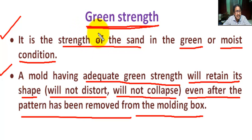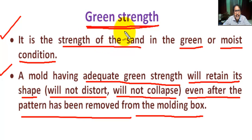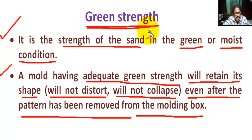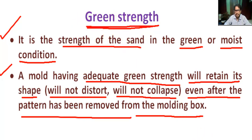The molten metal is poured into the green sand mold without any prior baking or drying. In the absence of green strength, dimensional stability and high accuracy cannot be achieved.